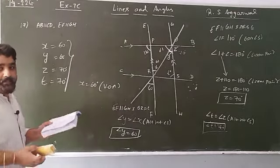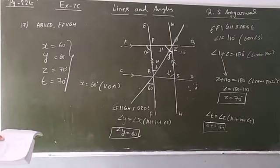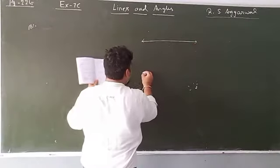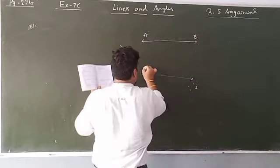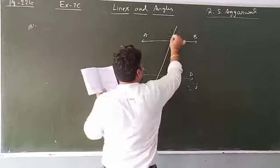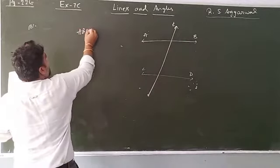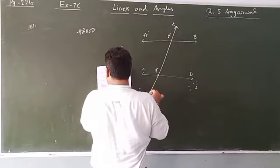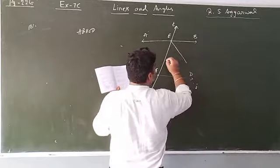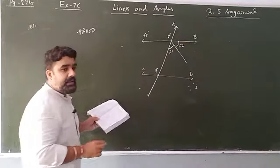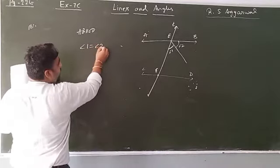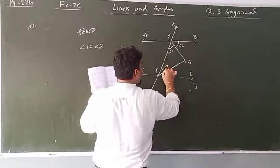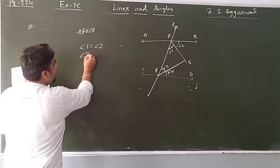Let's see question number 18. In the given figure, AB is parallel to CD, and a transversal T cuts them at points E and F. EG and FG are bisectors of the angles at E and F respectively. A bisector divides an angle into two equal parts, so angle 1 equals angle 2, and angle 3 equals angle 4. We have to prove that angle EGF equals 90 degrees.